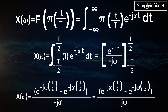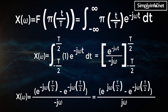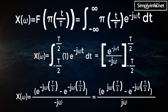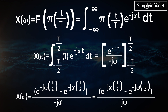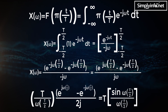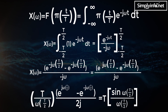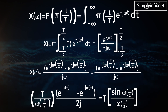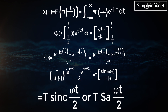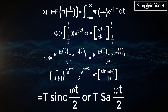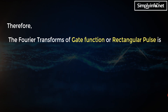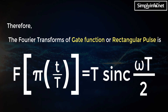X(ω) equals [e^(jωτ/2) − e^(−jωτ/2)] / (2j), which equals τ times sin(ωτ/2) / (ωτ/2), which is equal to τ sinc(ωτ/2). Therefore, the Fourier transform of the gate function or rectangular pulse is: F{π(t/τ)} = τ sinc(ωτ/2).